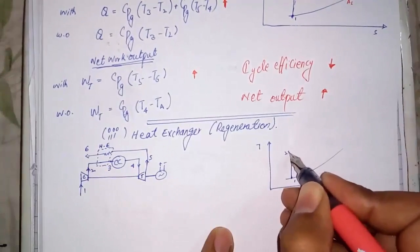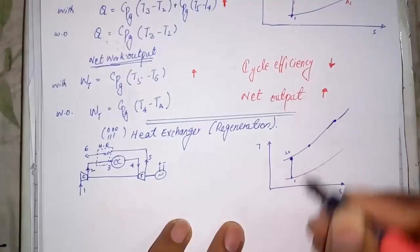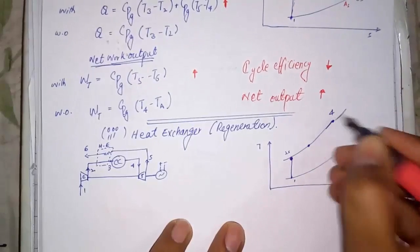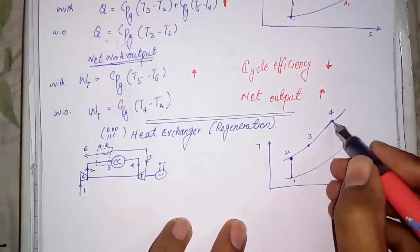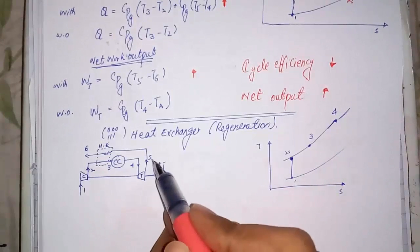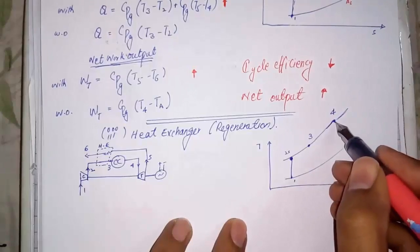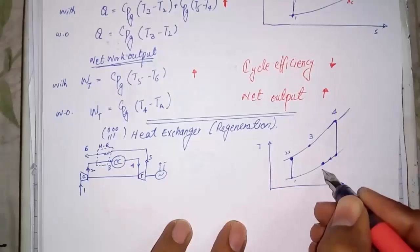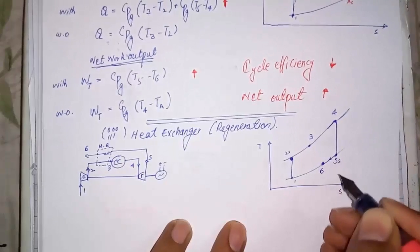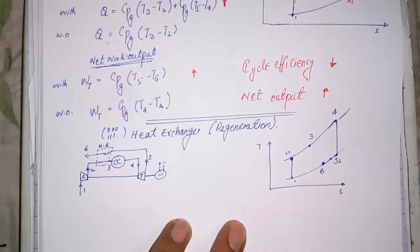From 1 to 2, it is compression. From 2 to 3, the temperature is raised by the exhausted gases. From 3 to 4, the air is combusted. 4 to 5 in TS diagram shows the expansion. And 5 to 6, the heat is transferred to the air from exhausted gases.